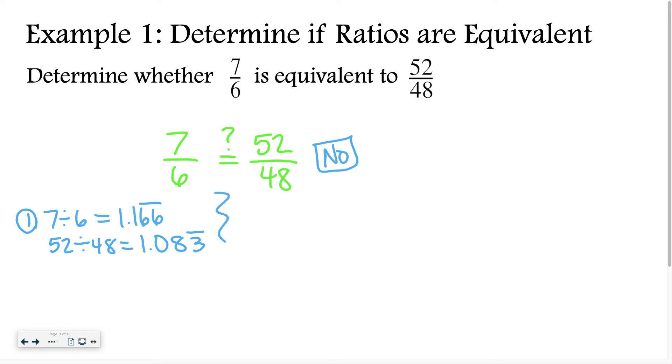A second way you can solve it is to do cross products. So what you can do is you can say any numbers in the diagonal. So 7 times 48 equals 336. And then you would do 6 times 52. And since we already stated that these aren't equivalent fractions, we know it's not going to work out. But if these two numbers were equal, it would be an equivalent ratio.